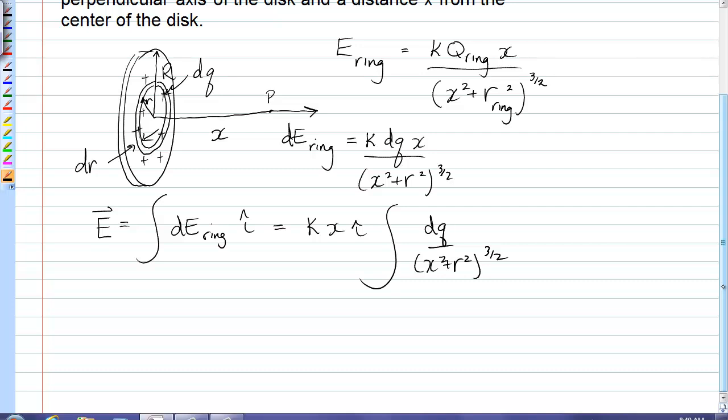And the limits of integration are from 0 to capital R, but we need to get dq in terms of r, so to do that we use surface charge density, or area charge density, which we call sigma.